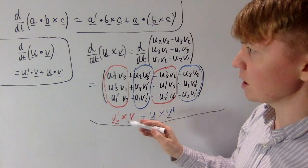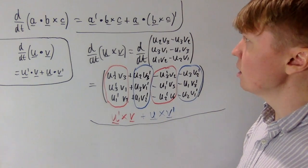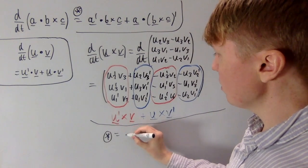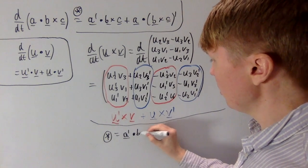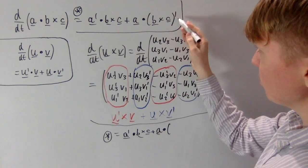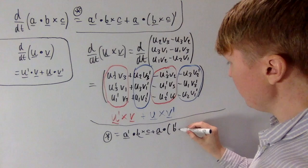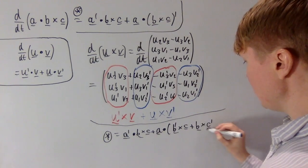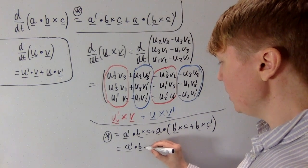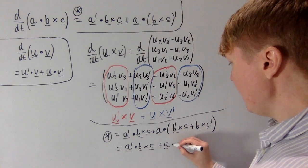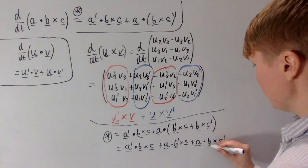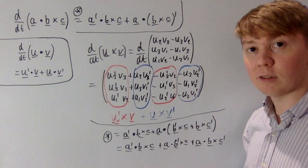Applying this to our original problem, using the scalar triple product notation, we have: a' · (b×c) + a · (b'×c + b×c'). Expanding the brackets gives our final expression: a' · (b×c) + a · (b'×c) + a · (b×c'). This is a really nice expression for the derivative of the scalar triple product, and it's remarkably similar to the product rule for three real-valued functions.